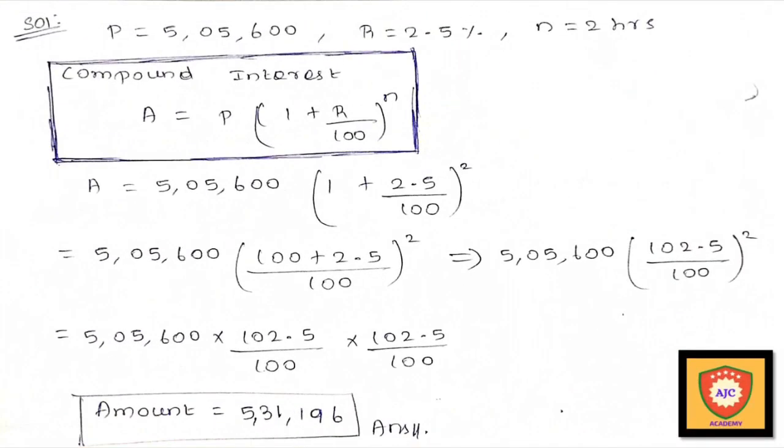How to solve the bacteria? The principal equals 5600.